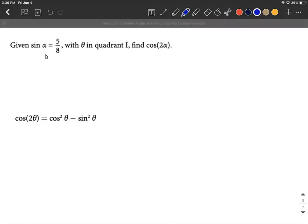Okay, we're given sine of alpha is equal to 5 over 8, and we're also told that theta, which we're going to use alpha, isn't going to be in quadrant one. All right, and our goal on this is to find cosine of 2 alpha.